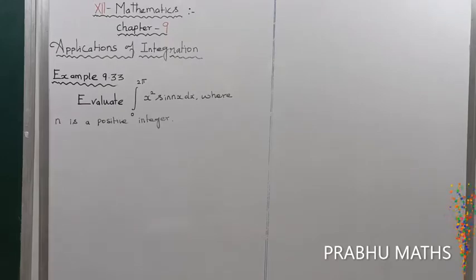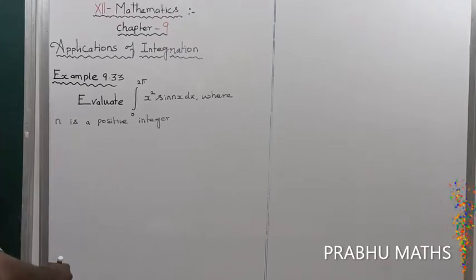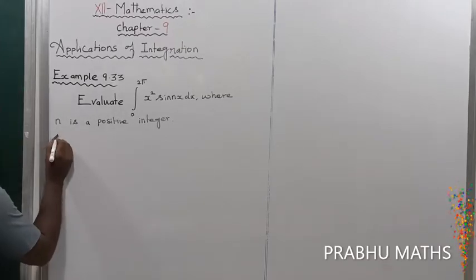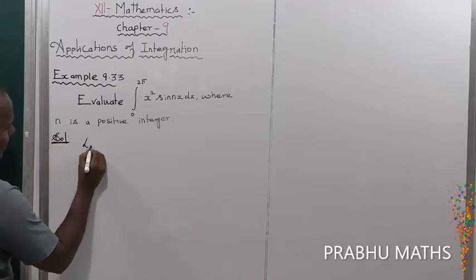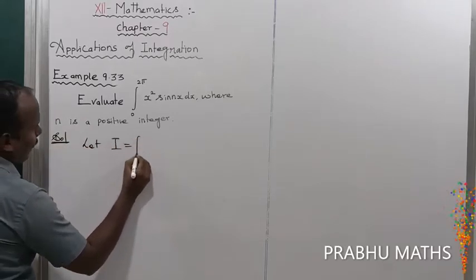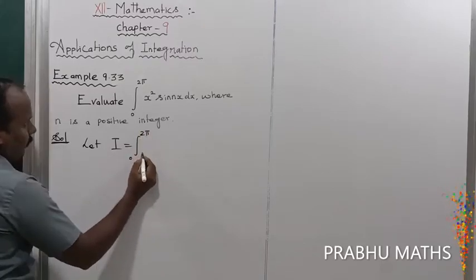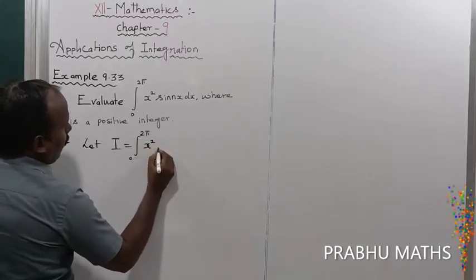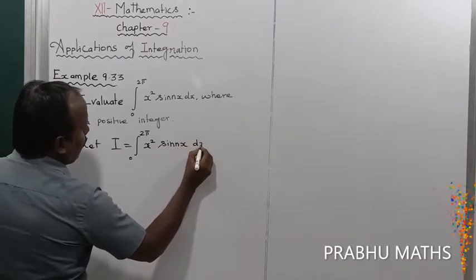Example 9.33: Evaluate the integral from 0 to 2π of x² sin(nx) dx, where n is a positive integer. Let us consider the given integral as I, equal to the integral from 0 to 2π of x² sin(nx) dx.